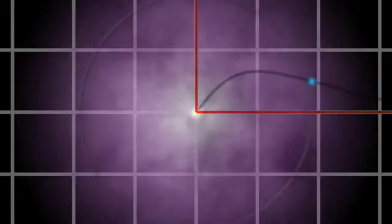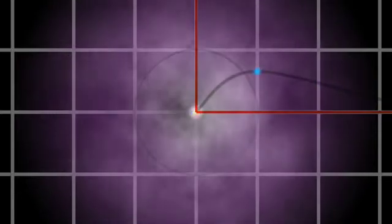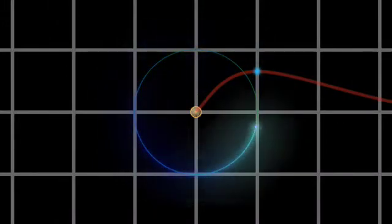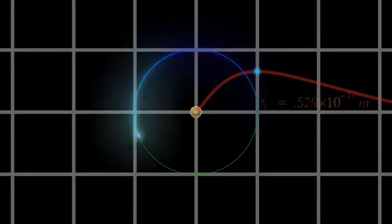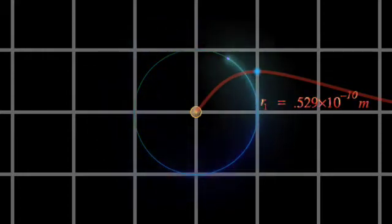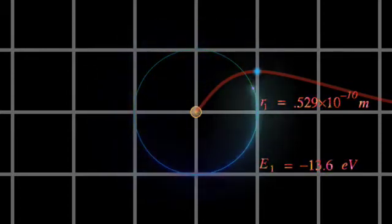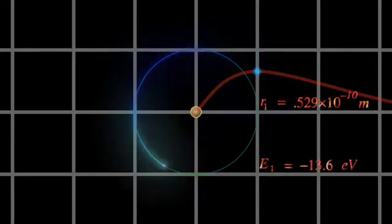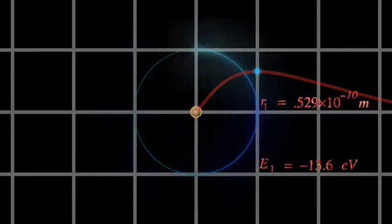Amazingly, the radius where the probability reaches a maximum is precisely equal to the radius of the first allowed orbit of Niels Bohr's model of the hydrogen atom. And its energy is exactly equal to the energy of an electron in this orbit, in the Bohr atom.